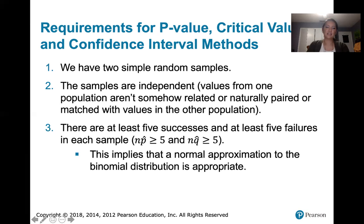If that last requirement is satisfied, then it's appropriate to use a normal distribution as an approximation to the binomial distribution. Otherwise, we shouldn't use the normal distribution as an approximation, but we could still use the exact binomial distribution in that case.